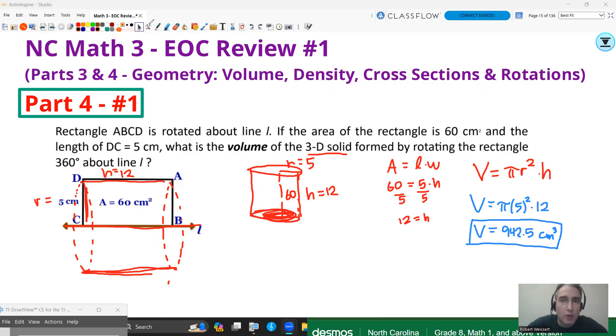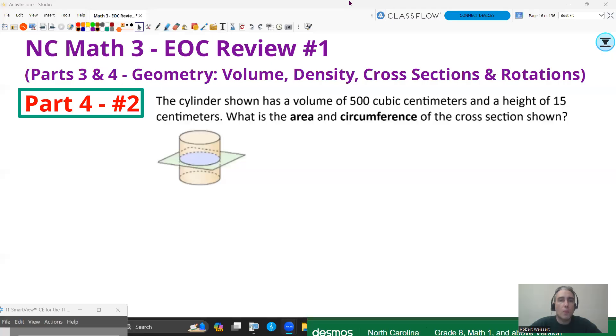Go on to the next question. One more question in this video. The question is number 2, part 4. The cylinder shown has a volume of 500 cubic centimeters and a height of 15 centimeters. What is the area and circumference of the cross section shown? Well, that cross section is a circle. So you should know the area of a circle is pi r squared, and the circumference of a circle is 2 pi r, two things that you're expected to know on this exam. So we have to figure out what the radius is to be able to get the area and the circumference.